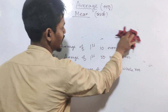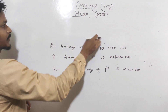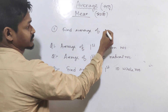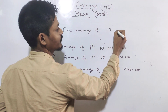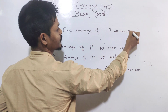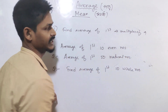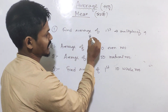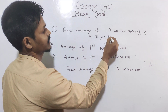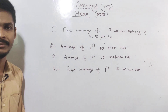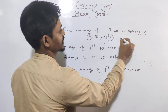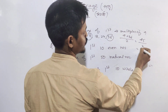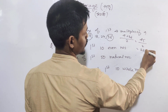Find the average of the first 4 multiples of 9. The first 4 multiples of 9 are: 9, 18, 27, 36. Using the formula — first term plus last term divided by 2 — that is 9 plus 36 divided by 2, which equals 45 divided by 2, which is 22.5.